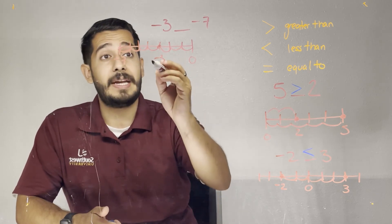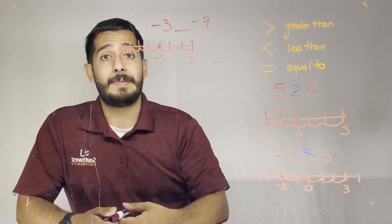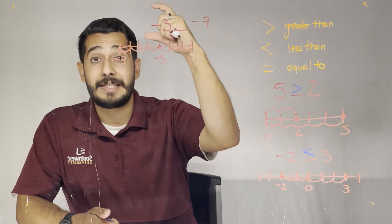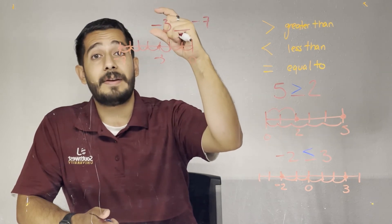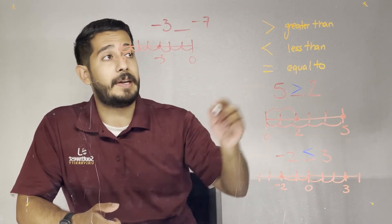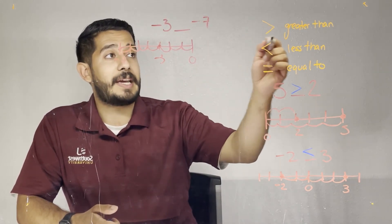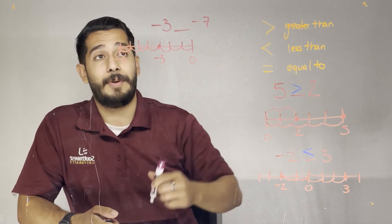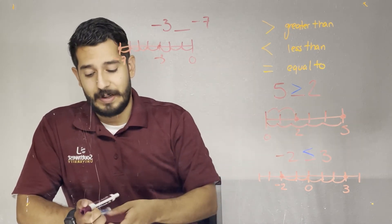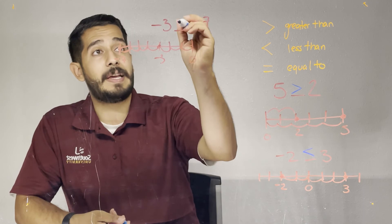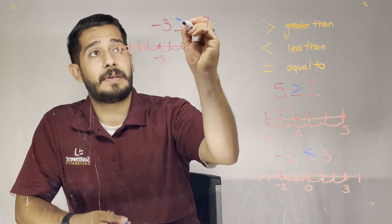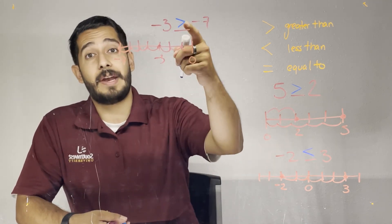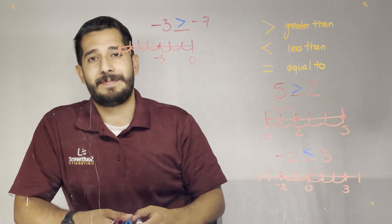So negative three is greater than negative seven. I have to find the sign that has the greatest opening towards negative three, and in this case it's going to be the greater than symbol. So this is the symbol that's going to be placed in between: negative three is greater than negative seven.